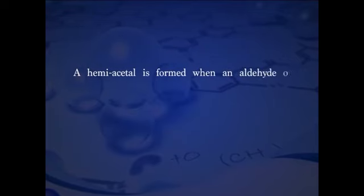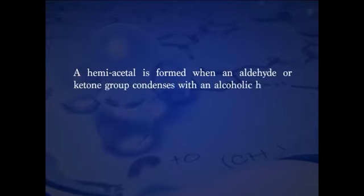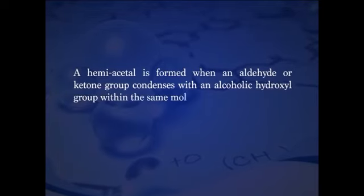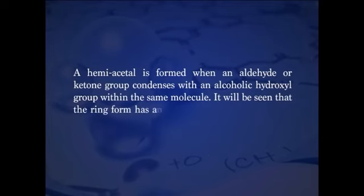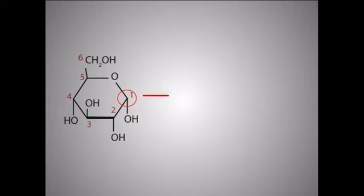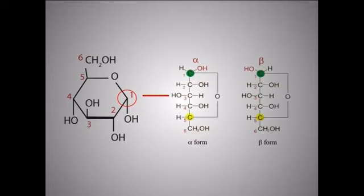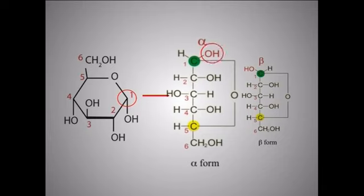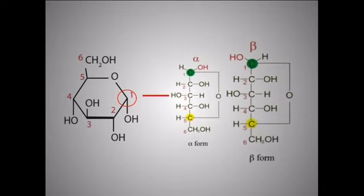Glucose exists in solutions mainly in the ring form by formation of an intramolecular hemiacetal. A hemiacetal is formed when an aldehyde or ketone group condenses with an alcohol hydroxyl group within the same molecule. The ring form has an additional asymmetric carbon atom. The asymmetry of C1 makes possible two ring forms, alpha and beta, with different optical rotations. The alpha form has the hydroxyl on the left and the beta form on the right.